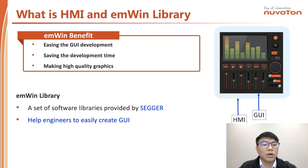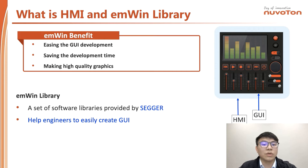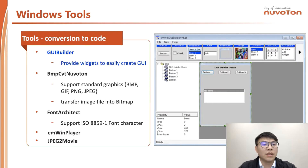In this page, we talk about what is HMI and what is EN-Wing Library. HMI's full name is Human-Machine Interface. You could consider users can interact with a LCD or OLED display, showing some graphics through touch controlling. EN-Wing Library is a set of software tools, APIs and libraries which is provided by SEG. EN-Wing Library could help engineers to easily create GUI and save development time, and finally improve the quality of GUI.